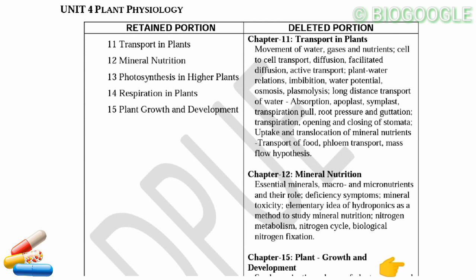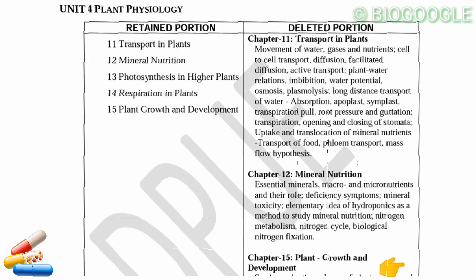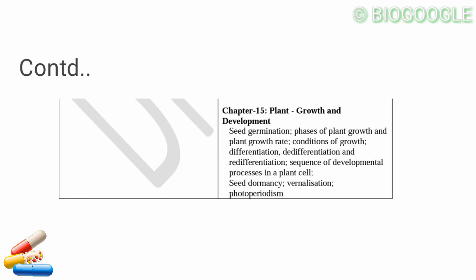Chapter 12 is deleted — you can modify it. Moving on: plant growth topics include sequence of developmental processes in plant cells, seed dormancy, vernalization, and photoperiodism. Almost the entire chapter is deleted from the books.